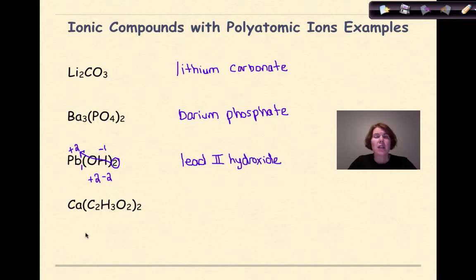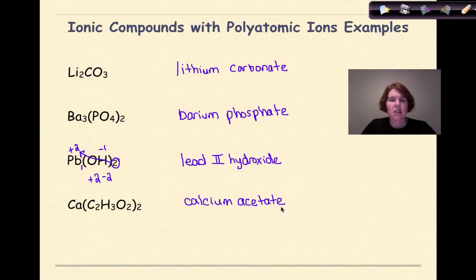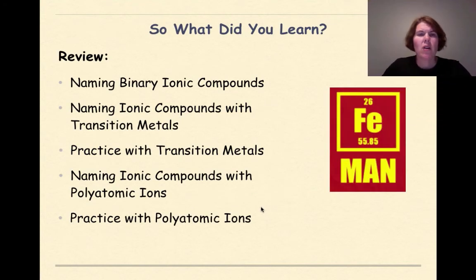Finally, Ca(C₂H₃O₂)₂: Ca is calcium, a group 2 metal with only one charge, so simply calcium. C₂H₃O₂ is acetate, so the compound is calcium acetate.